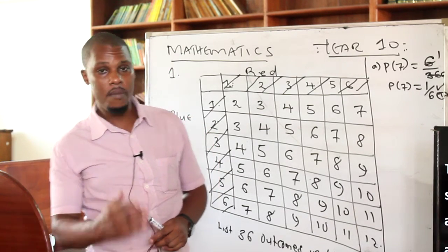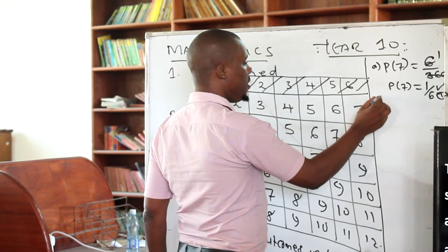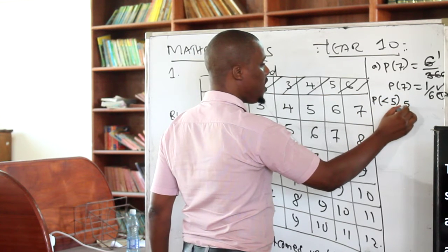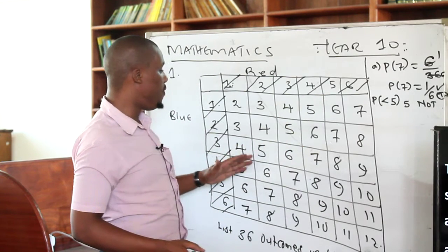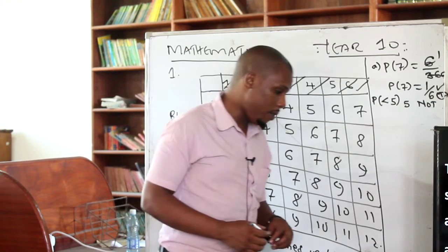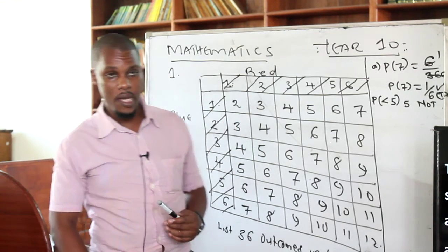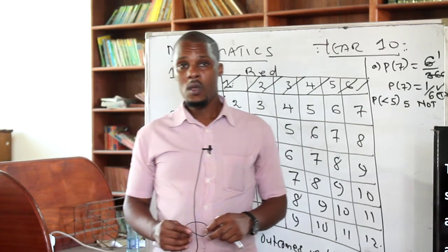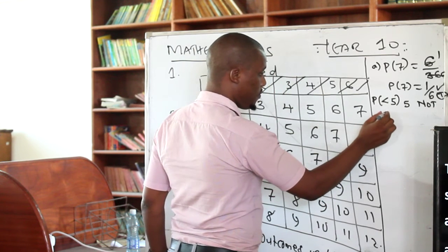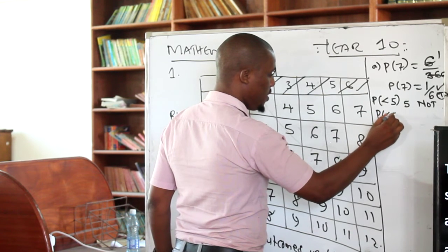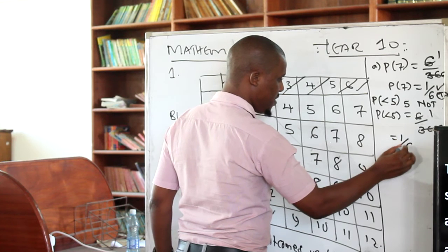Question two: you are told the sum is less than 5. So what is the probability that the sum is less than 5? This means 5 is not included — make sure that if it is less than 5, you do not include the 5. You go from 4 and below. If you count them: 1, 2, 3, 4, 5, 6 — there are 6 of them. So the probability of getting a sum less than 5 is 6 over 36, which simplifies to 1 over 6. Identifying that 5 is not included gets you a method mark, and the correct answer is 1/6.